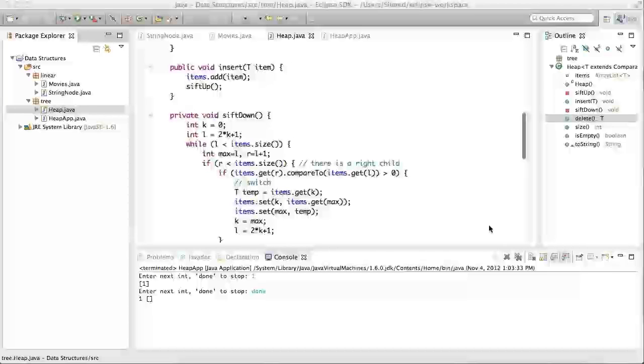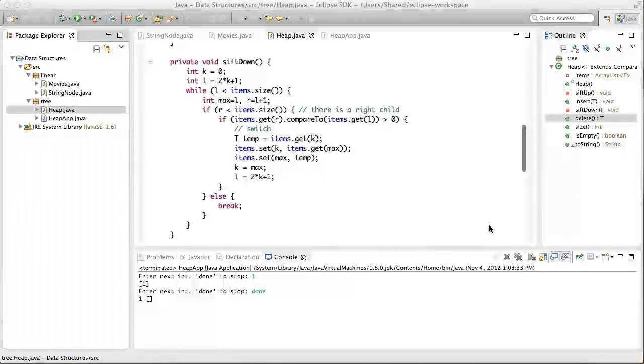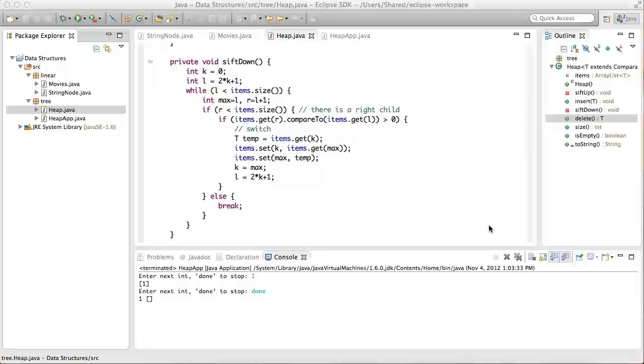Moving on, you've already seen the code for the sift down process as well. Again, this method is declared private, so as to not be accessible from applications, only from the delete process.